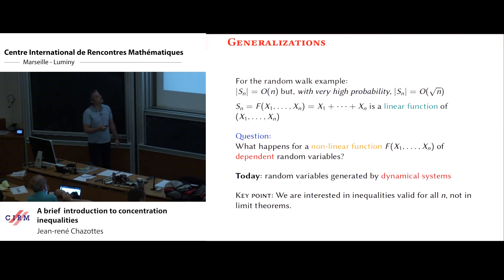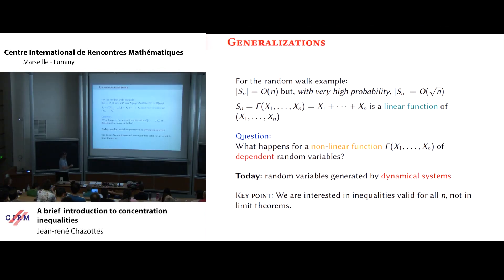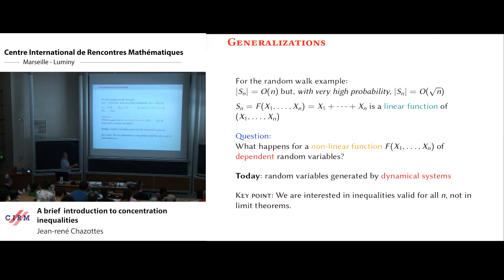To summarize roughly but correctly: in the random walk example, the distance after n steps is a priori of order n, since it can be as large as n. But with very high probability you are concentrated in an interval of width square root of n. S_n is a function of x_1, ..., x_n which is simply a sum — a very simple linear function of the random variables.